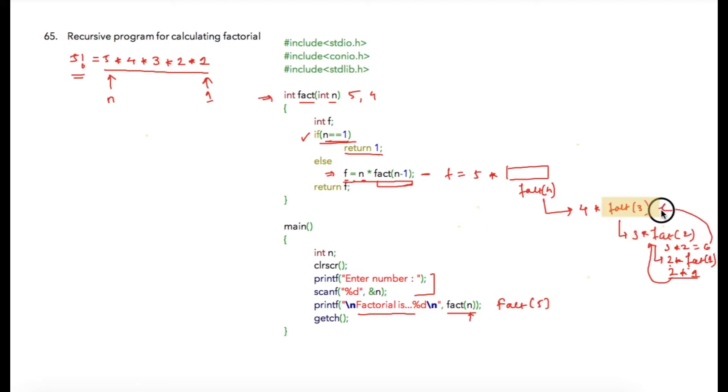Then 4 multiplied by 6, which equals 24, will be passed to this function. So we get the final value as 5 multiplied by 24, which equals 120. This statement is executed, which was our first call, and then f will be returned. So 120 will be replaced over here, and the output will be 'factorial is 120'.